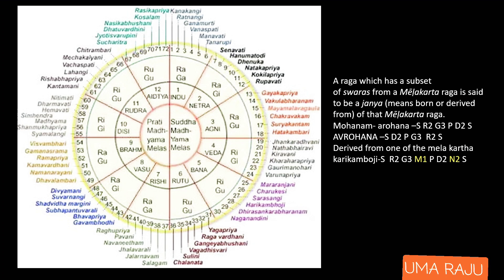For example, if you look at Mohanam raga — the first varnam is often in Mohanam — its notation in arohana is Sa-Ri-Ga-Pa-Da-Sa, and avaroha is the same in reverse. It is derived from the Melakarta raga Harikambhoji. Harikambhoji's notation is Sa-Ri-Ga-Ma1-Pa-Da-Ni-Sa. If you compare, Ma and Ni are missing in Mohanam — that is why Mohanam is a Janya raga derived from Harikambhoji.